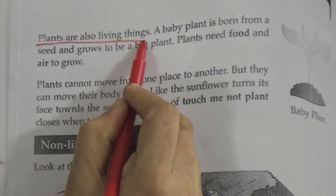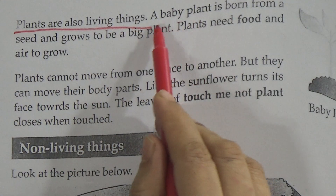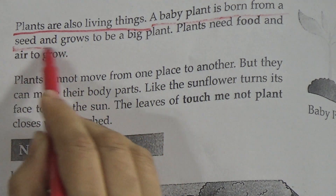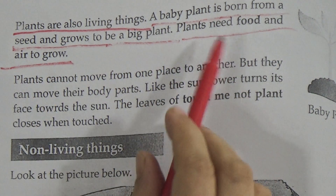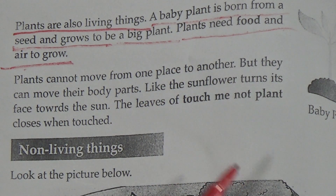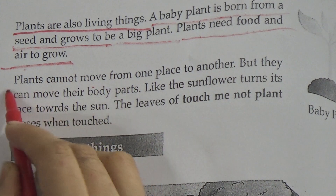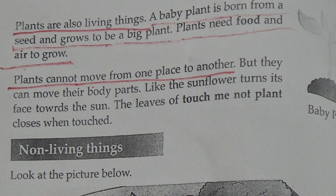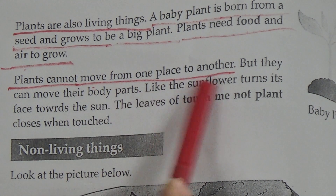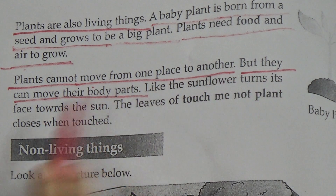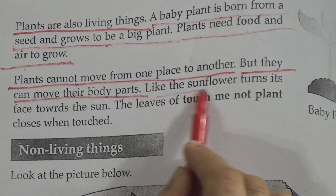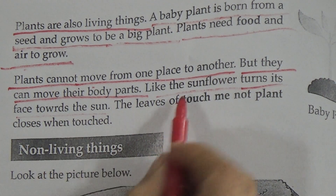Now come to the next page. Plants are also living things — underline this important line. A baby plant is born from a seed and grows to be a big plant. Plants need food and air to grow — this is very, very important. Plants cannot move from one place to another, but they can move their body parts.